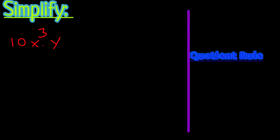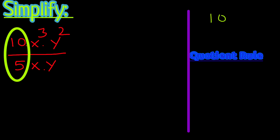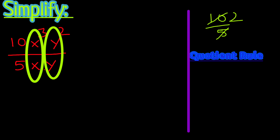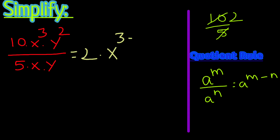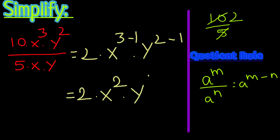The next problem is 10 times x to the power 3 times y to the power 2, divided by 5 times x times y. Taking the constant terms: 10 divided by 5 is 2. Dividing the x terms: x to the power 3 minus 1. Dividing the y terms: y to the power 2 minus 1. So we have 2 times x to the power 2 times y to the power 1.